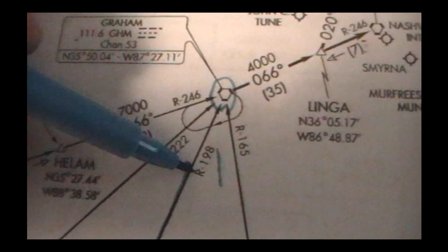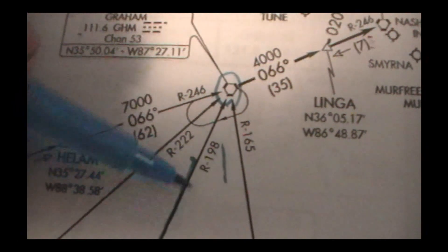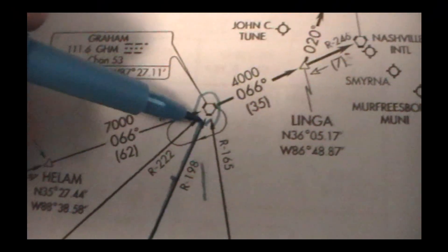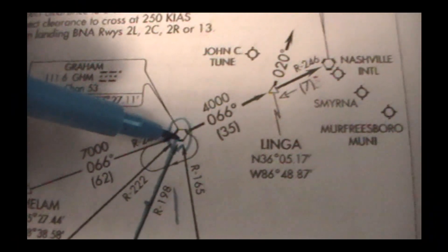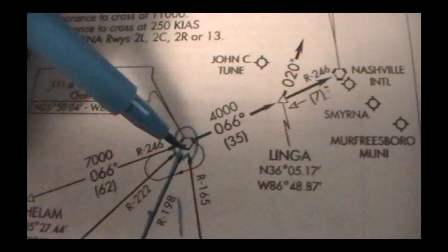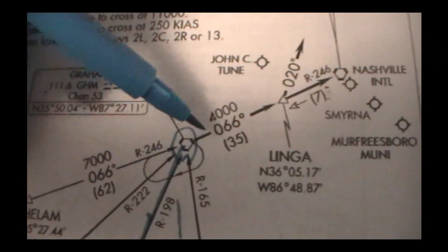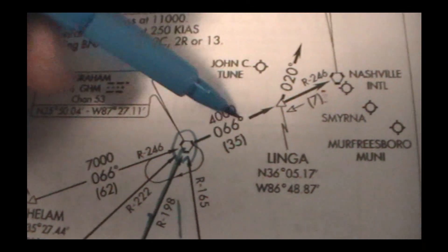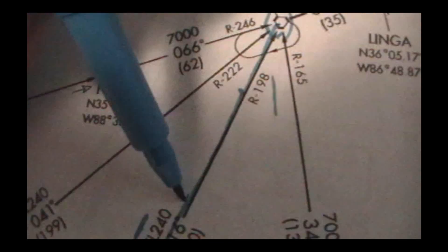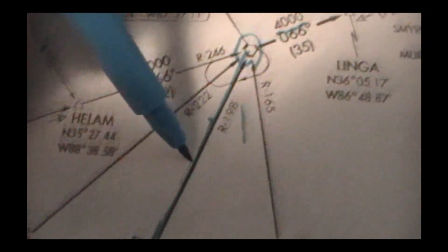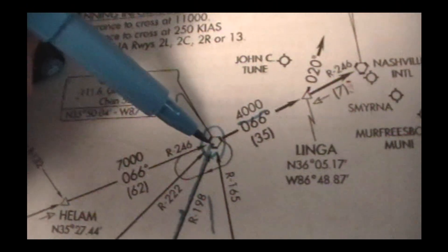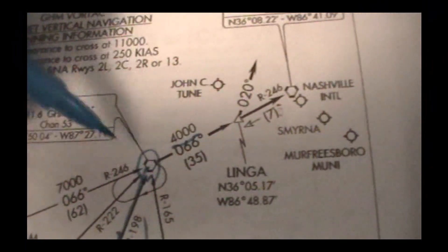180 degrees is due south, so 198 is about 200 degrees. We're going to cross over there, and by the time we get here we want to be close to about 4,000 feet. So we're descending, and we're at 4,000 feet — we just crossed over the Gram VOR.